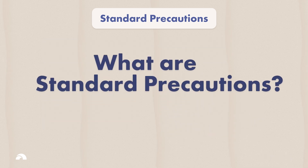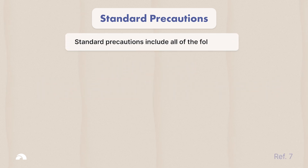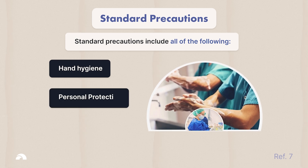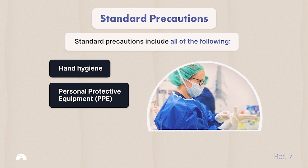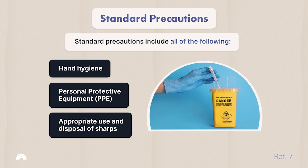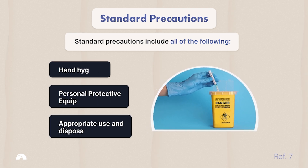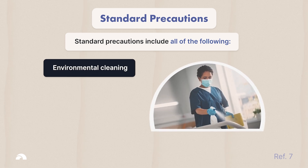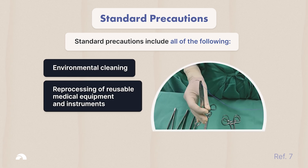So, what exactly are standard precautions? Standard precautions include all of the following: hand hygiene, personal protective equipment (PPE), appropriate use and disposal of sharps, environmental cleaning, and reprocessing of reusable medical equipment and instruments.